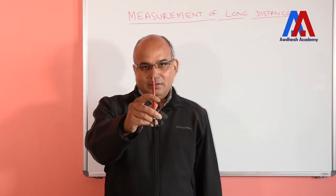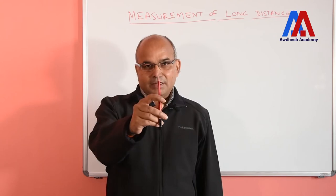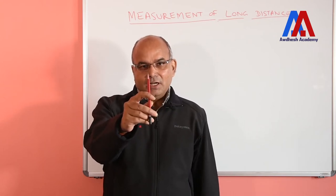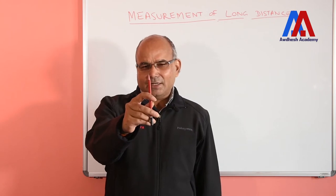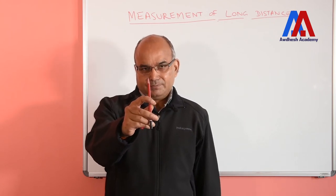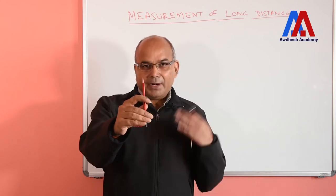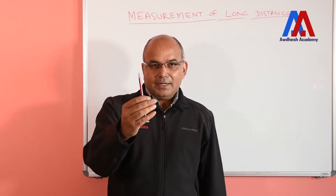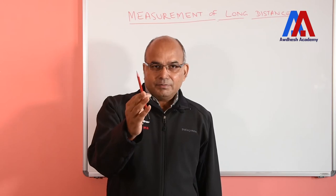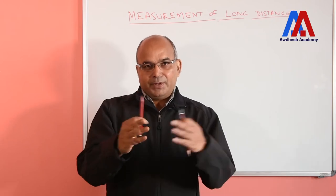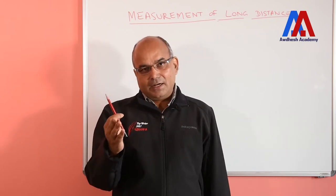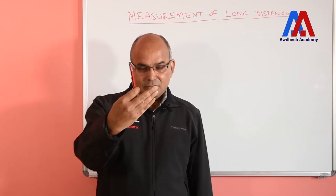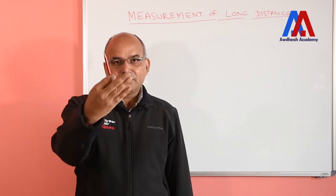Suppose I take a pencil and see it from the left eye — it will be at a different position. And if we see it from the right eye, it will be at a different position. Our brain has a system that compares the picture from the left and right eyes and then finds the distance or the depth of the object.